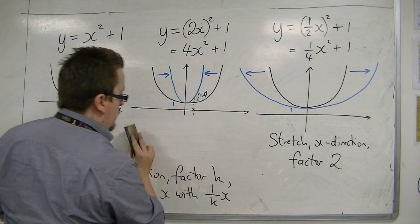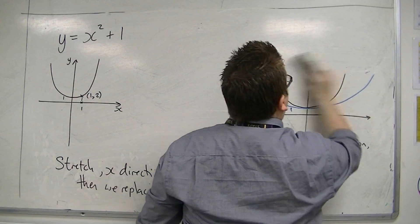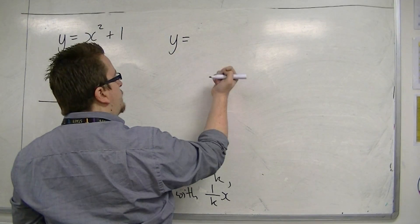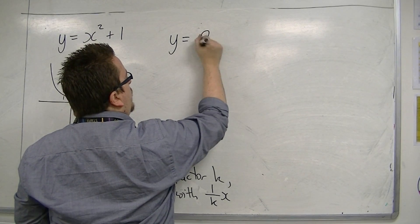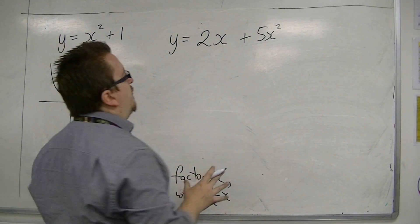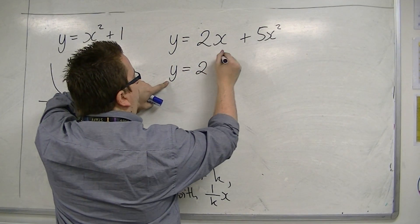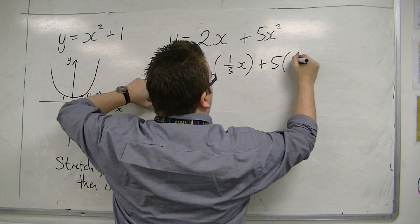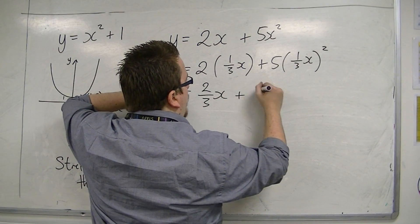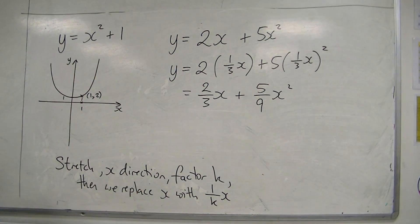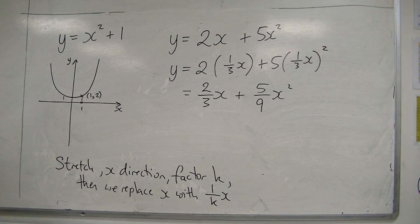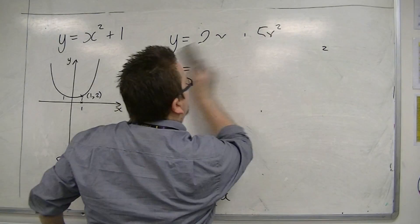An example of that would be, let's say we had y is equal to 2x plus 5x squared, and I wanted to stretch this graph by a factor of 3, then I would replace the x's with 1 third x. So that this is the new equation, I've got 5 ninths x squared. This is that graph, but stretched in the x direction by a factor of 3.